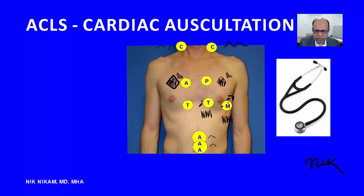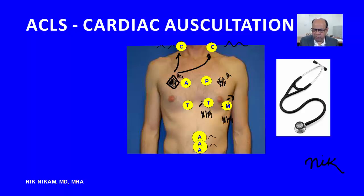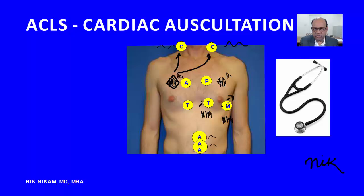One more point about the aortic stenosis murmur: it is conducted to the neck as a carotid bruit, which is another reason why you must always listen to the neck when examining patients. The aortic and pulmonic regurgitation murmurs are of low pitch and are of a decrescendo type. Abdominal bruits are also of low frequency, and you should listen to the carotids for any bruit that might signify stenosis in the carotid arteries. This has been an overview of cardiac auscultation and an introduction to cardiac murmurs.